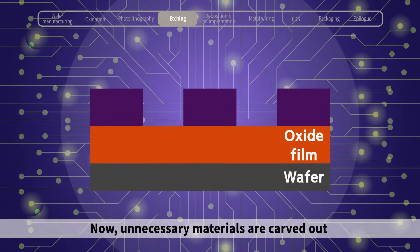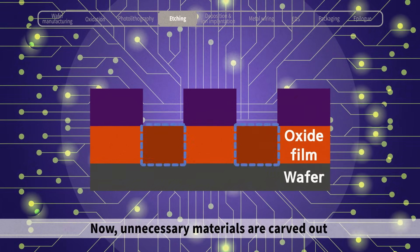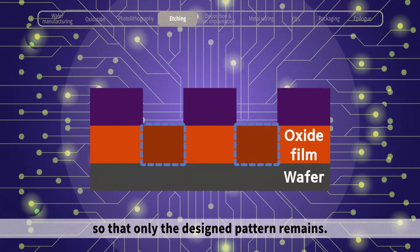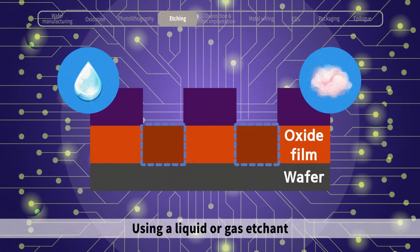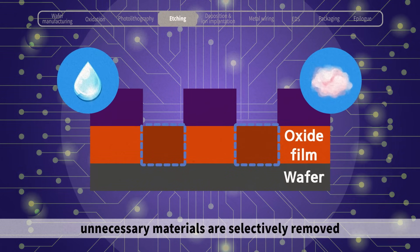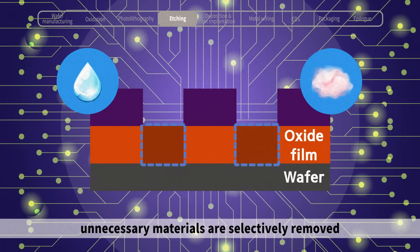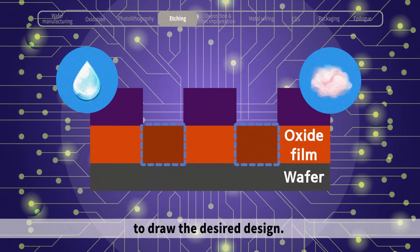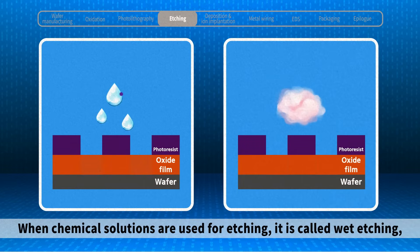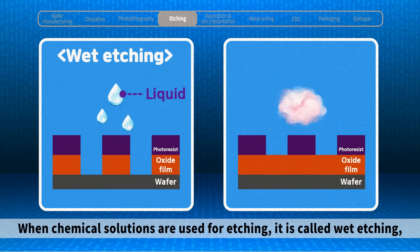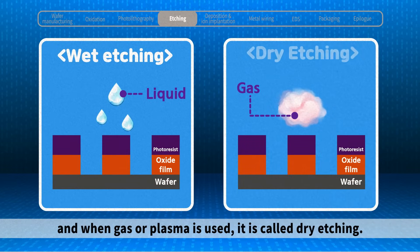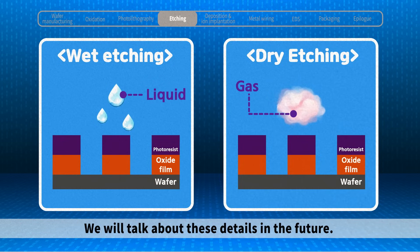Now, unnecessary materials are carved out so that only the design pattern remains. Using a liquid or gas etching, unnecessary materials are selectively removed to draw the desired design. When chemical solutions are used for etching, it is called wet etching. When gas or plasma is used, it is called dry etching. We will talk about these details in the future.